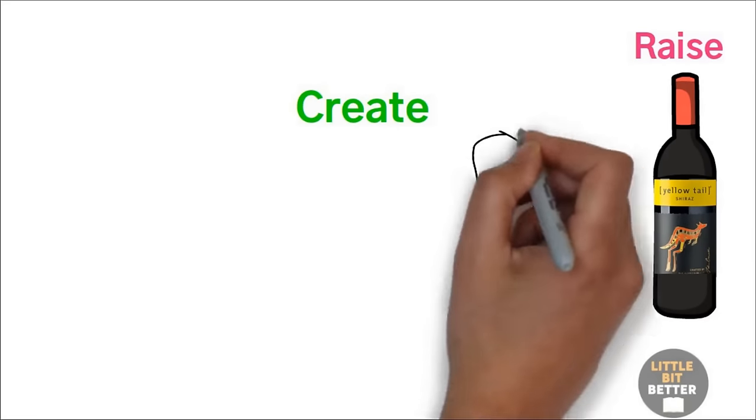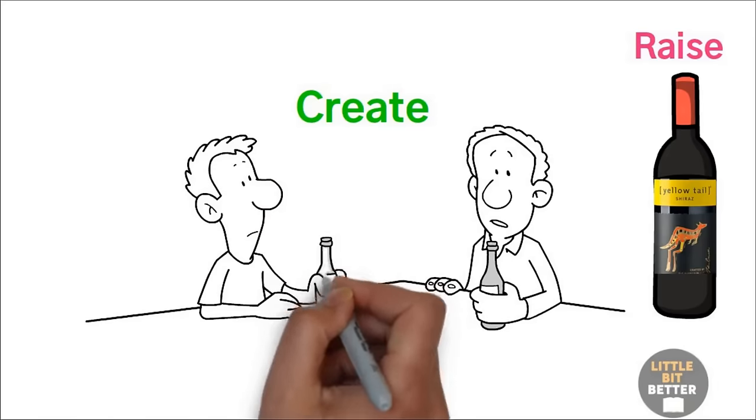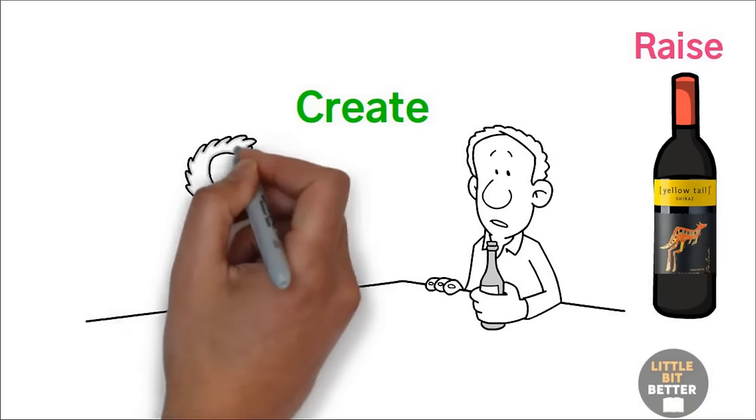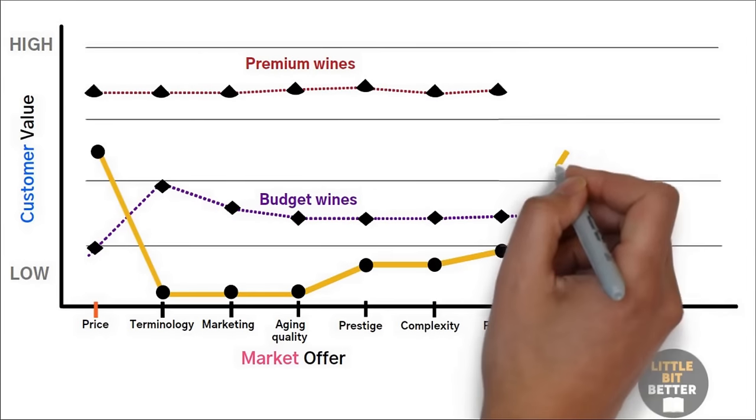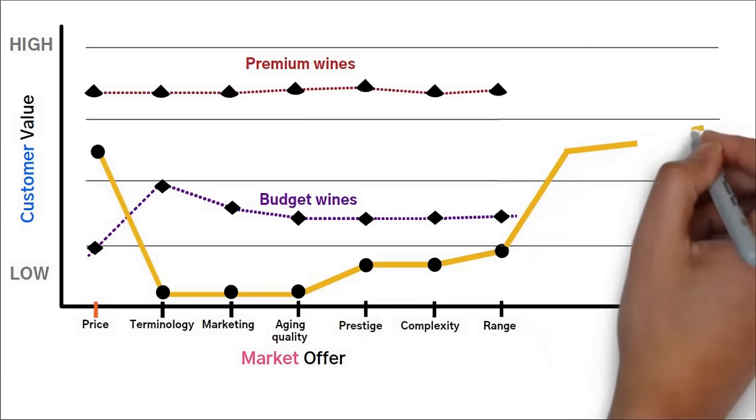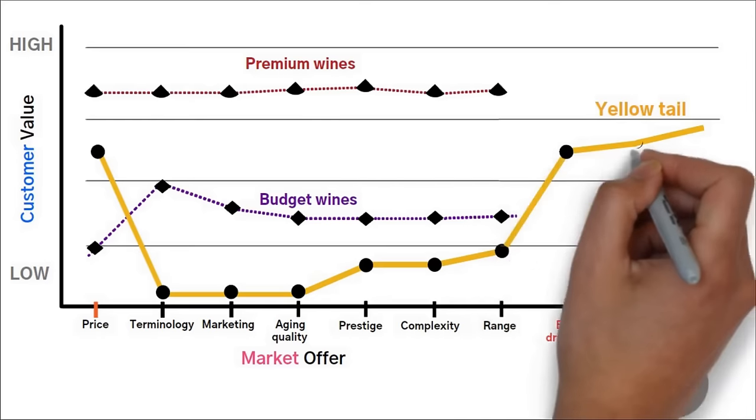Create. They mainly focused on non-customers of wine, such as beer and cocktail drinkers, and found out that many of them rejected wine because of its complicated taste and difficulty to select. Using this information, they created a wine called Yellowtail that is easy to drink, easy to select, and fun. The wine promised to jump from the glass like a kangaroo.